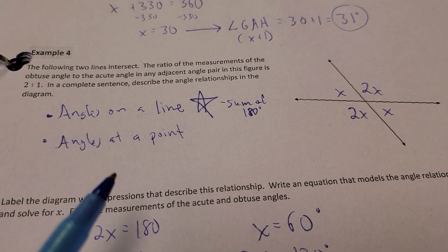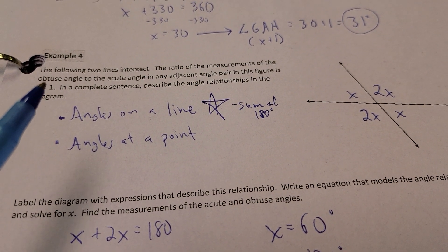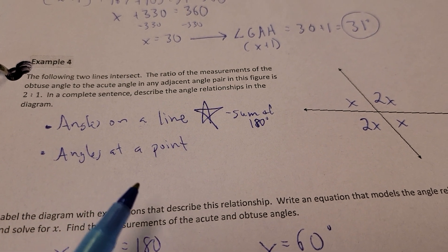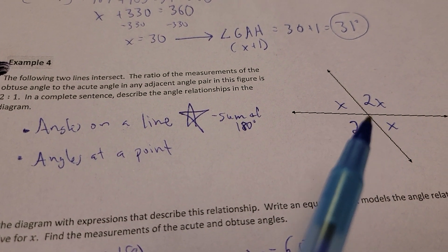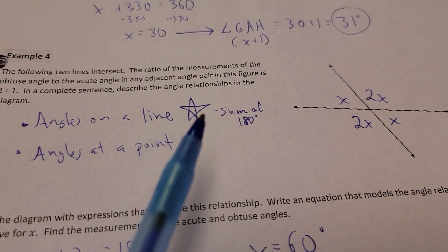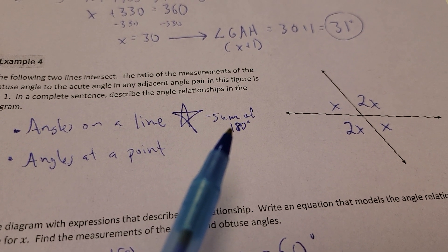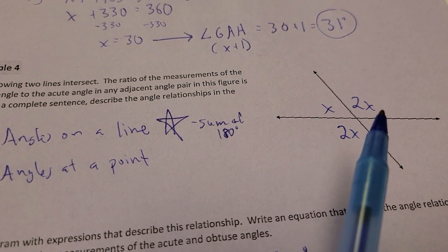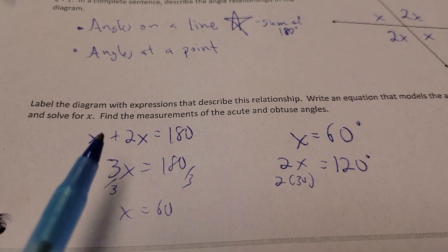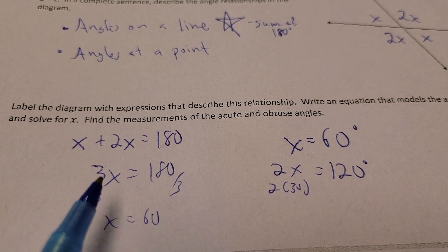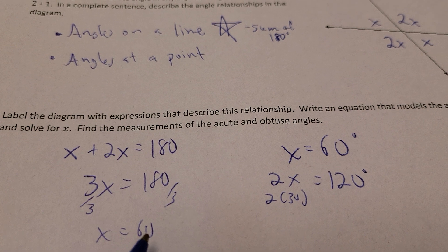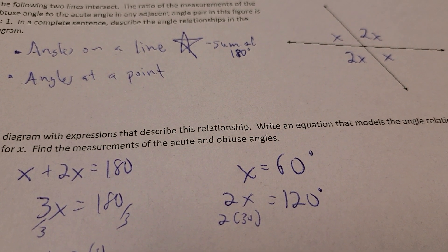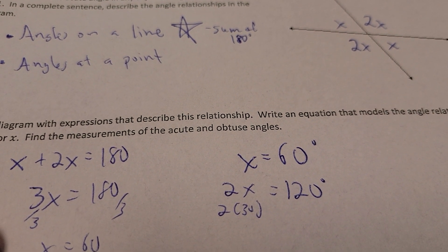Next up, I have the following two lines intersect. The ratio of the measurements of the obtuse angle to acute angle in any adjacent pair is 2 to 1. The complete sentence describes the angle relationships in this diagram. Well, I do got angles in a line, or I could think of it as angles at a point. I'd rather go with a smaller one. So, you're going to see that as you get through your examples and stuff. You try to pick the smaller. Why would I mess with 360, when I can just use 180? I could just say, well, X and 2X together equal 180. So, X and 2X makes 3X equals 180. Divide each side by 3, X is 60. So, if that's the case, there's my X. That's a 60, and then 2 times X would give you your 120. So, together, those add up to 180.